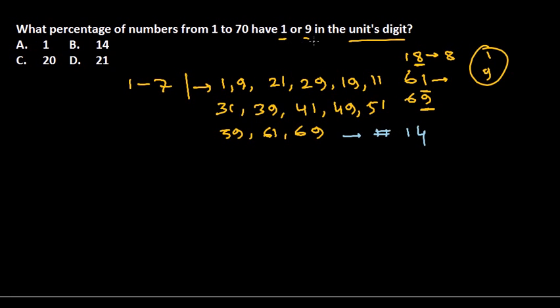To calculate the percentage, the formula is the number you got divided by the total number times 100. The number here is 14, the total is 70, so 14 divided by 70 times 100. This gives you 20.